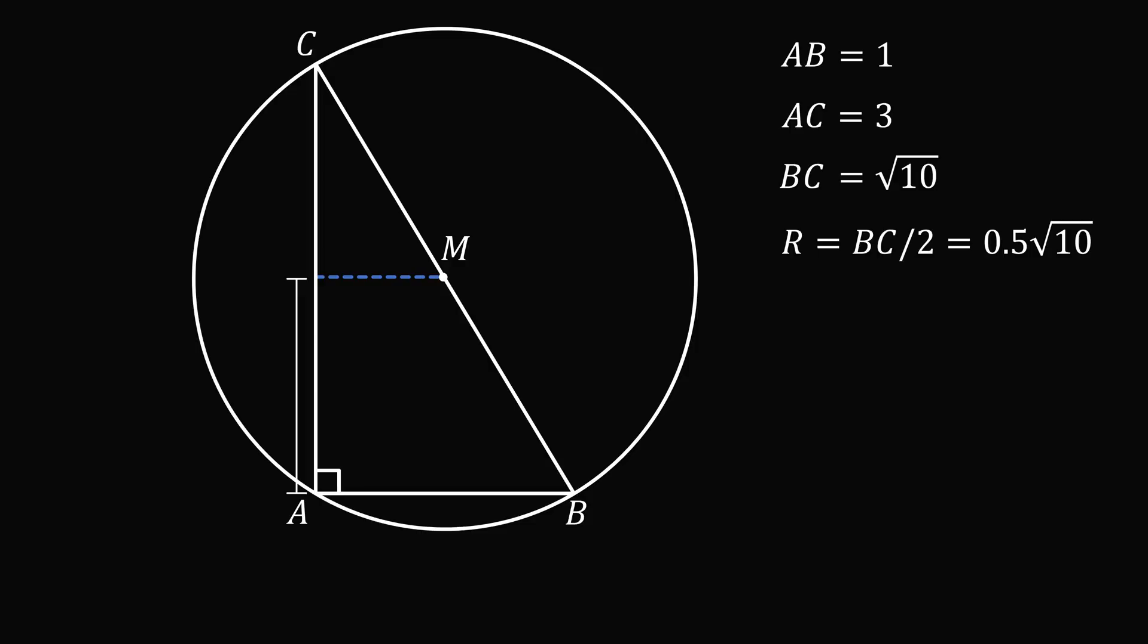Now, because M is the midpoint, it will be exactly half the horizontal distance of AB and half the vertical distance of AC. So from point A, it will be 0.5 units to the right, and 1.5 units up.